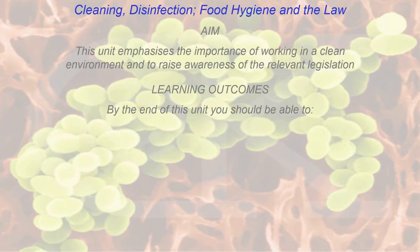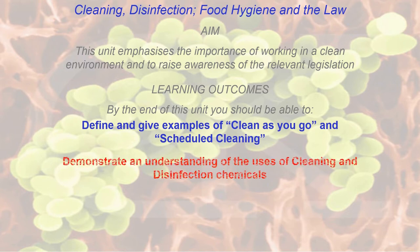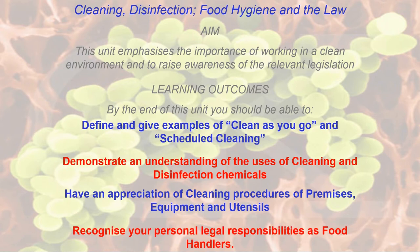By the end of this unit, you should be able to define and give examples of clean as you go and shadow cleaning, demonstrate and understand the uses of cleaning and disinfection chemicals, have an appreciation of cleaning procedures for premises, equipment and utensils, and lastly, recognise your personal legal responsibilities as food handlers.